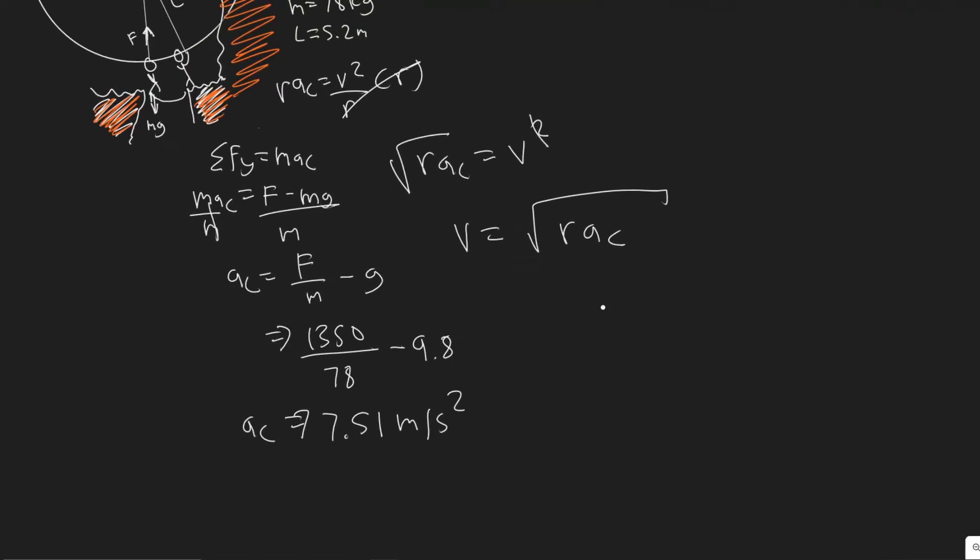So now what we want to do is I'm just going to plug it in. So we're doing the square root, 5.2, multiplying it by the centripetal acceleration, which we just found, 7.51. Let me draw this out a bit. And then now what we want to do is just plug this in. So we have the square root of 5.2 multiplying that by 7.51. You're going to get 6.249, which is just 6.25. Keep in mind, this is going to be the velocity. So v equals 6.25 meters per second. So 6.25 meters per second, that's going to be your velocity.